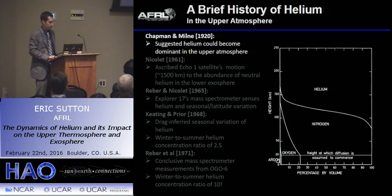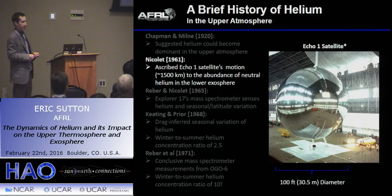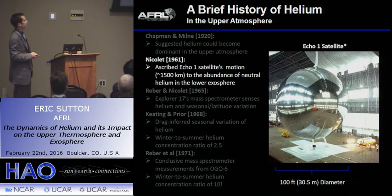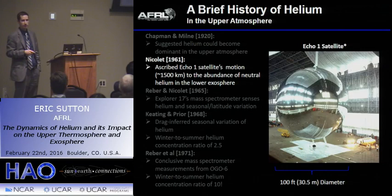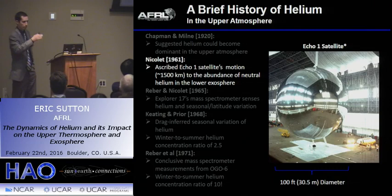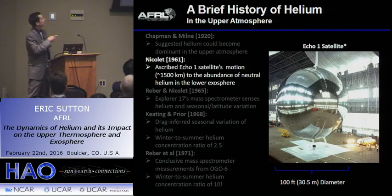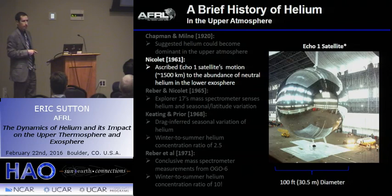What they did capture was that the nitrogen distribution would soon give way to a lighter species — helium — if you go up far enough. Notionally this is very accurate, though quantitatively not so much. It took another 40 or so years to have good observational data to back this up. By this time we're into the space age — we've launched rockets and satellites. This happened to be a very large satellite, about 100 feet in diameter, launched into the lower exosphere at about 1,500 kilometers.